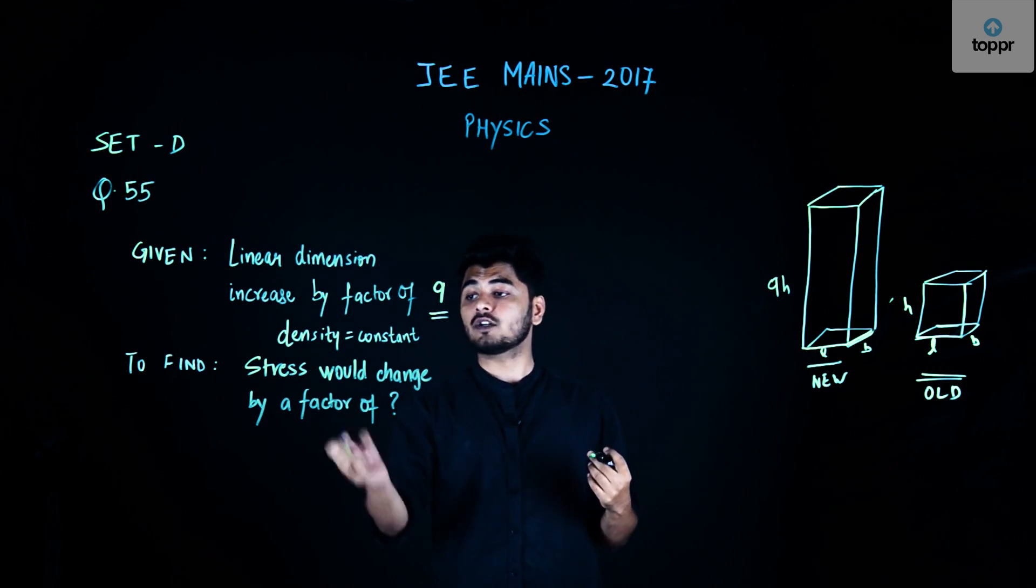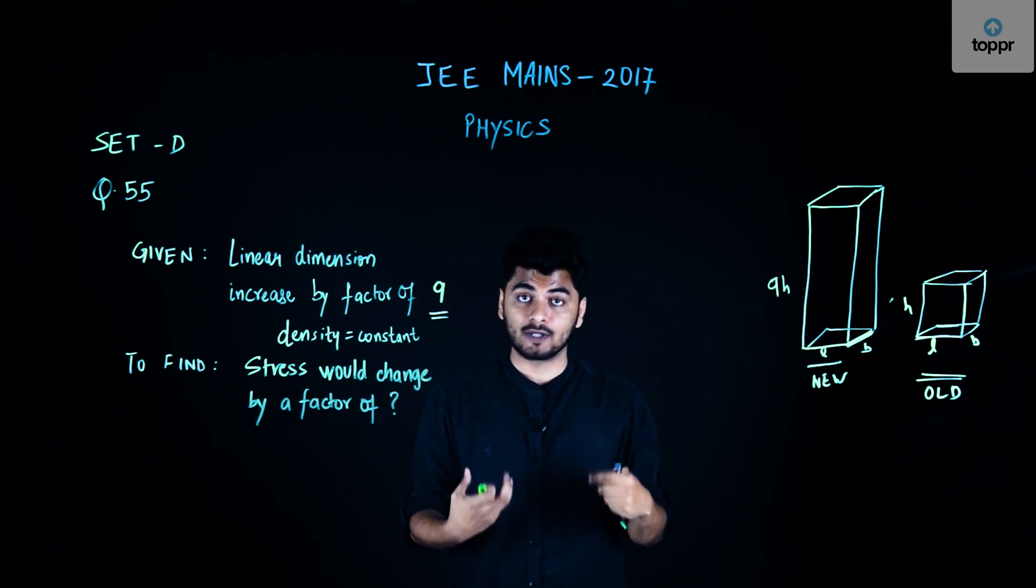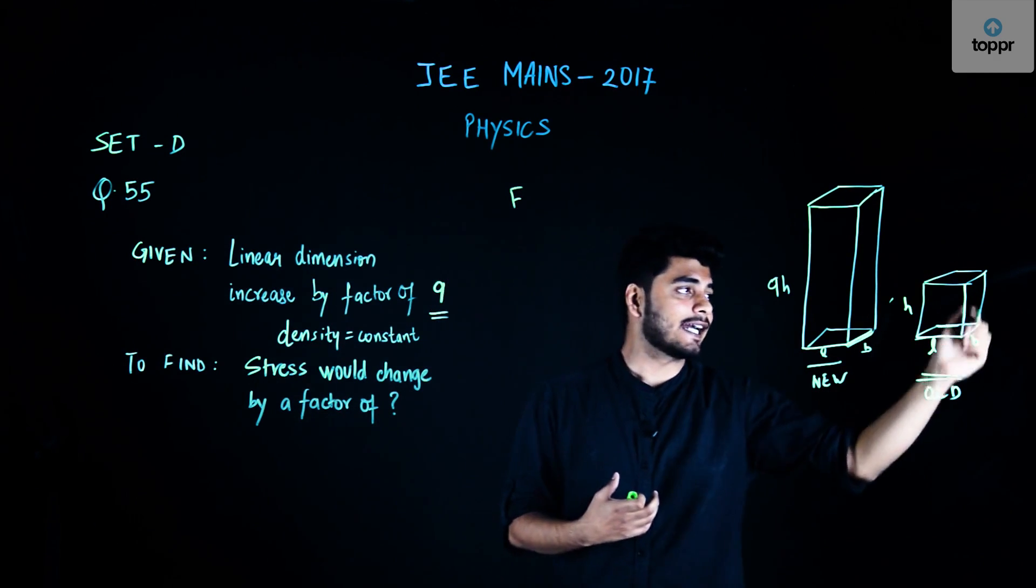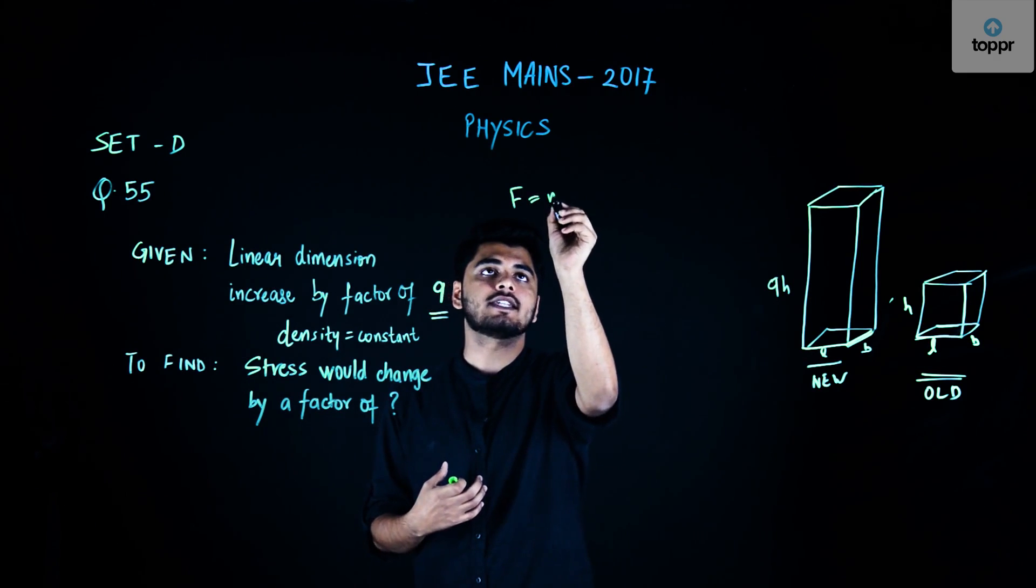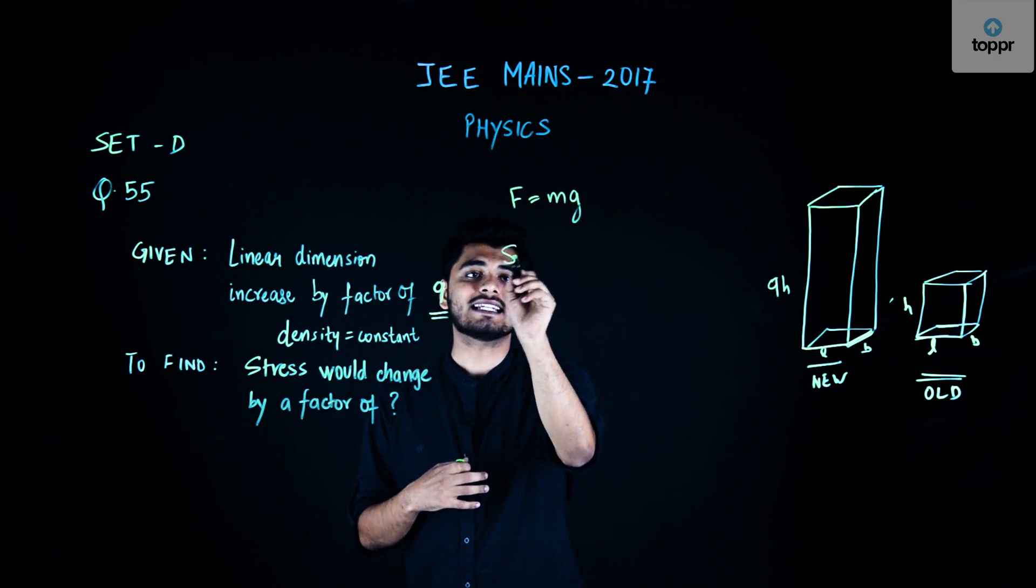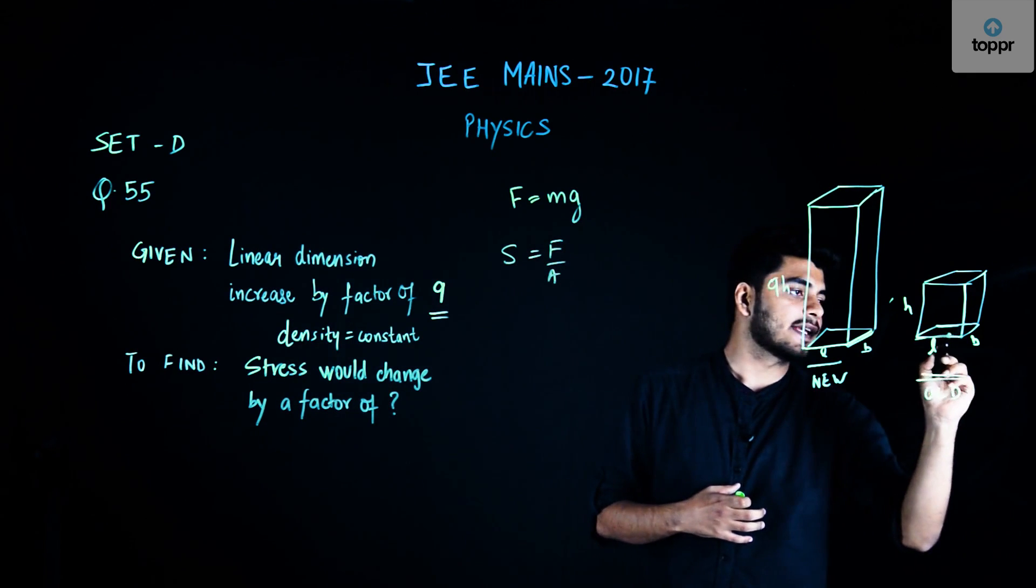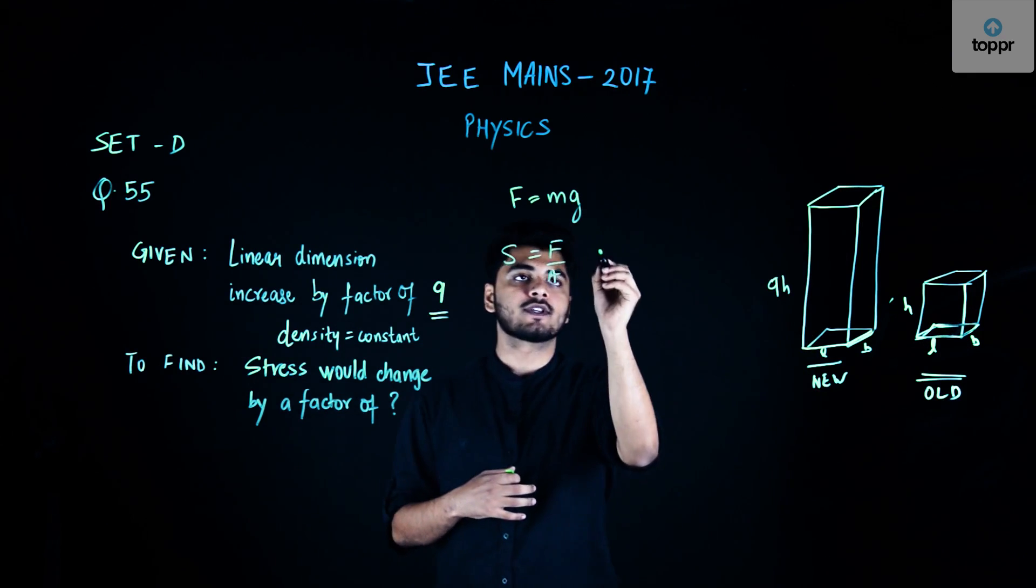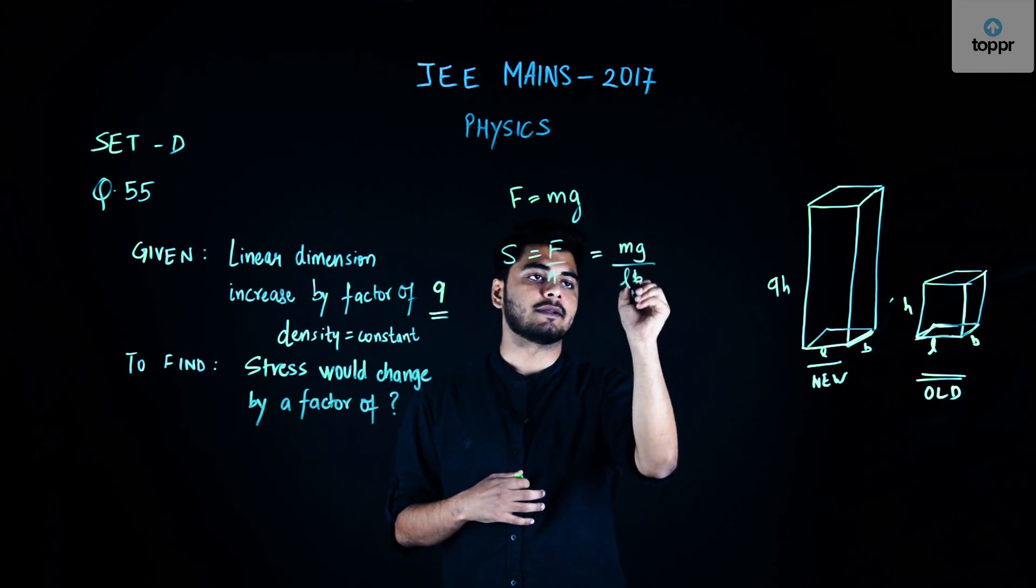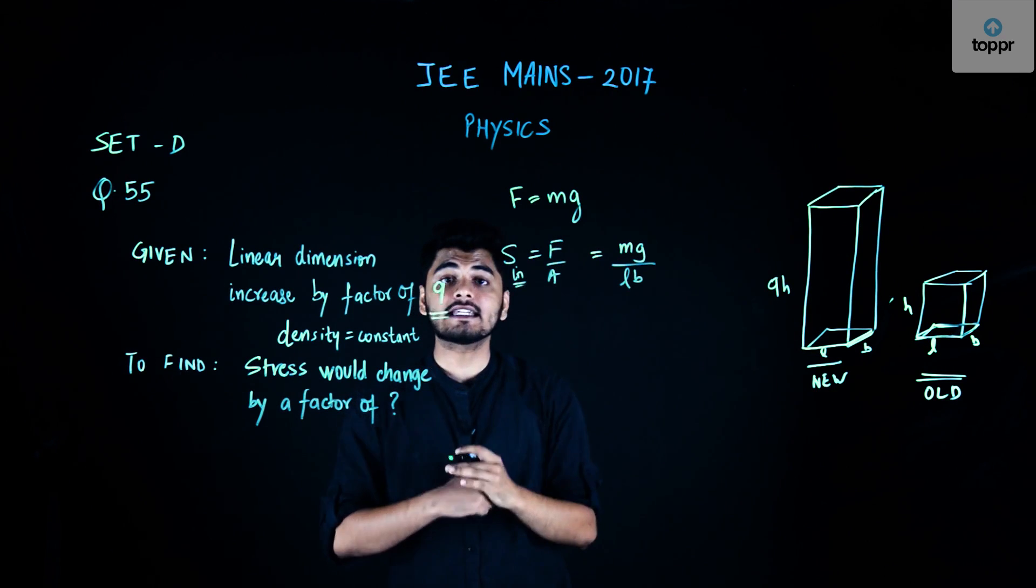I need to find the factor by which the stress would increase. I know that the force of this entire mass is F = mg. Stress is force by area. In this case, if I take this base, L × B is my area. So stress initial = mg/(L × B).